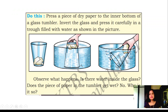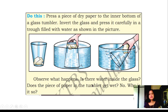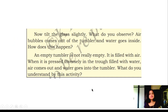Take one vessel and a transparent glass. Press a piece of dry paper in the inner bottom of the glass tumbler. Invert the glass and press it carefully into a trough filled with water. No water will enter into it. Observe what happens — is there water inside the glass? Does the paper get wet? No. Why? Because air is inside the glass.